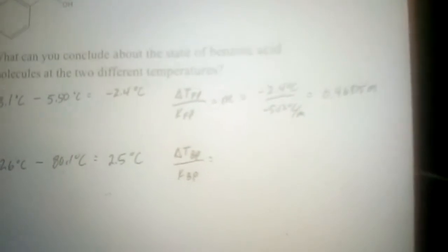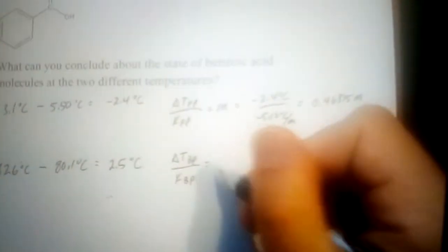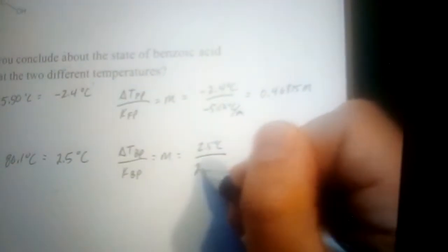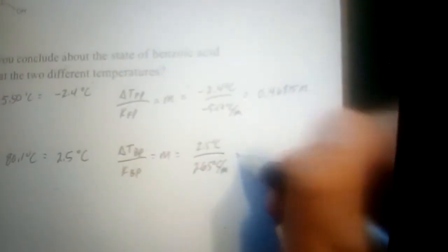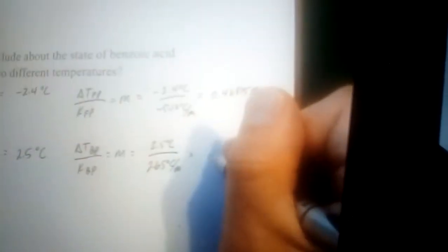We can calculate the molality at the boiling point. The temperature change was 2.5, the constant is 2.65. Already you might see there's a difference in the constants, although the changes were about the same. Divide through there, and the concentration is 0.9434 at the boiling point.